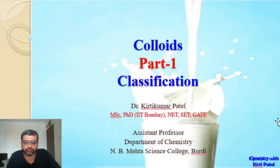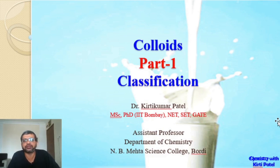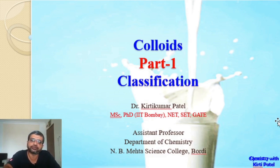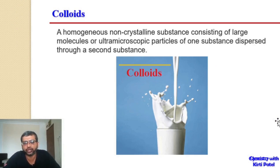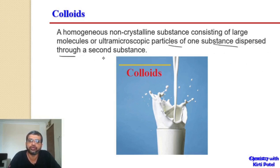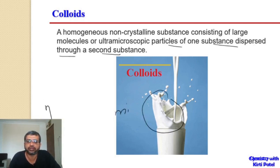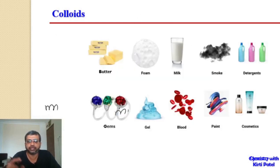Dear friends, this is our first lecture on the colloids chapter. We are beginning with the second chapter of our TY BSc course — colloids and surfactants. In this first lecture, we will see the classification of colloids. Colloids are homogeneous, non-crystalline substances consisting of large molecules or ultra-microscopic particles of one substance dispersed through a second substance. Examples include milk and many other substances.